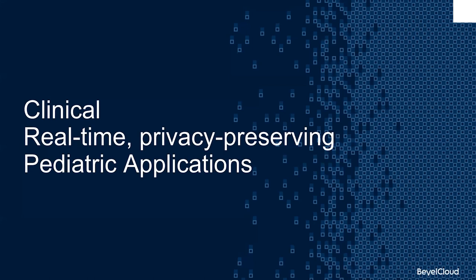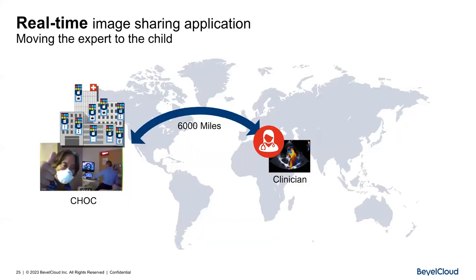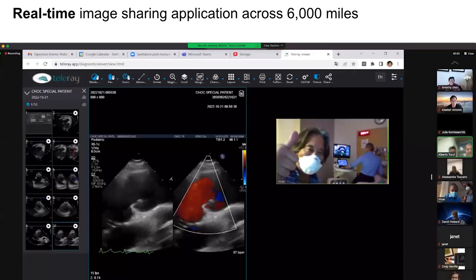So that's the infrastructure — the next question is: what the hell would you do with it? I'll talk about a clinical application. Remember I started with the little girl in Myanmar. In November of last year, we actually ran the world's first real-time image sharing application across 6,000 miles. An edge server was deployed at Children's Hospital in Orange County, and 6,000 miles away a pediatric cardiologist was able to see it in real time.